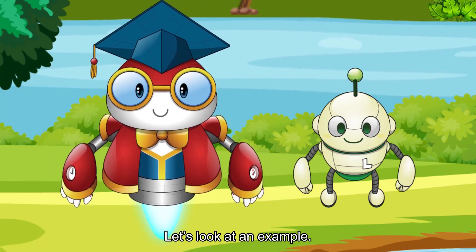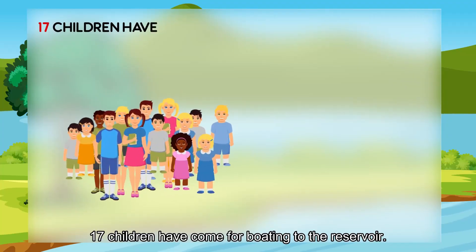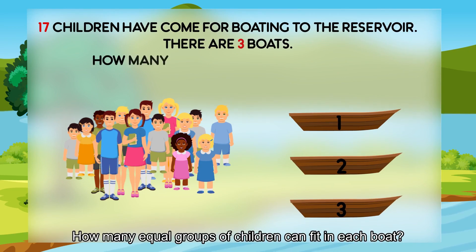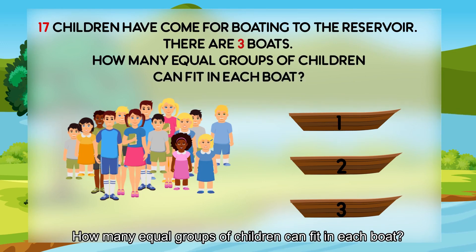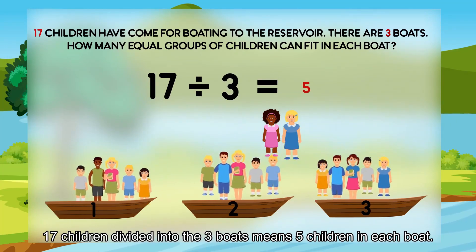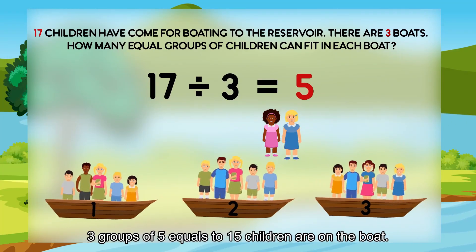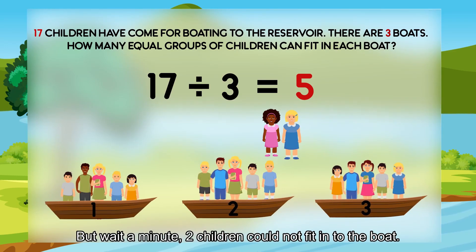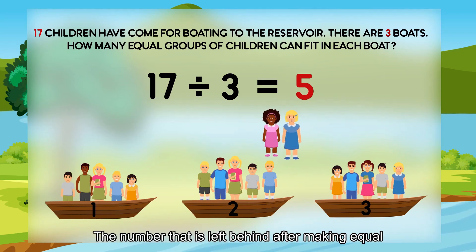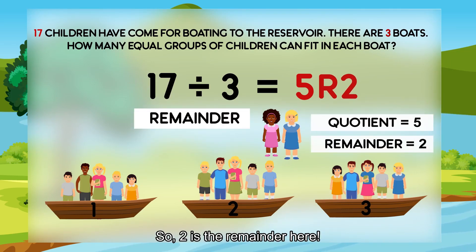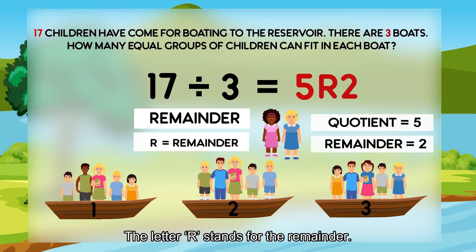Let's look at an example. 17 children have come for boating to the reservoir. There are three boats. How many equal groups of children can fit in each boat? 17 children divided into three boats means five children in each boat — three groups of five equals 15 children on the boat. But wait a minute — two children could not fit into the boat. The number left behind after making equal groups is called the remainder. So two is the remainder here. The letter R stands for the remainder.